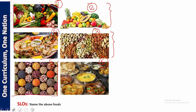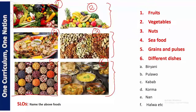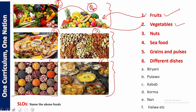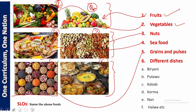Now coming toward some of the dishes. The first one is fruit, number two is vegetable, number three are nuts, and this one is seafood, and this is grains. These are different dishes — in the next class we will discuss the different dishes we prepare at home.